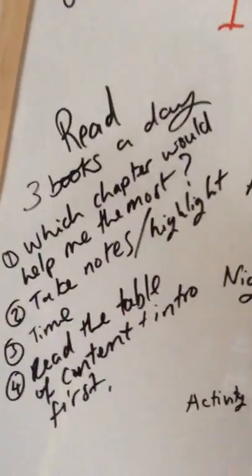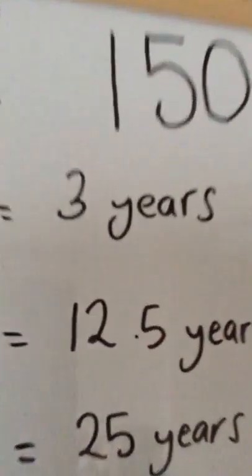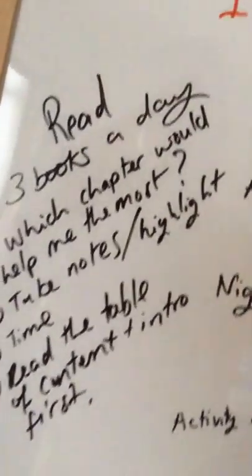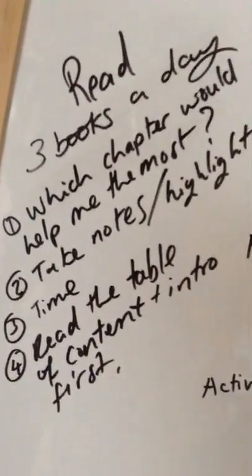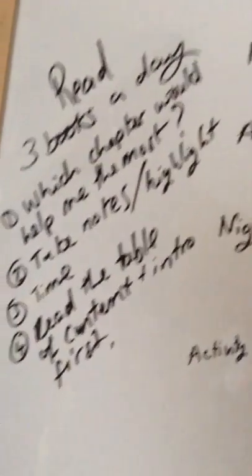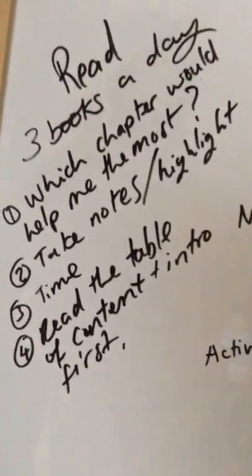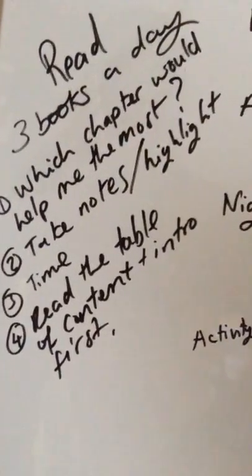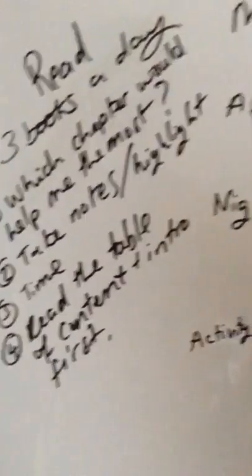To read three books a day, to reduce this number, because three years is just too long. Three books a day, which is chapter that will help you. Take notes and highlights, watch your time, and read the table of contents plus intro first.